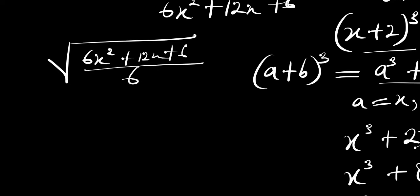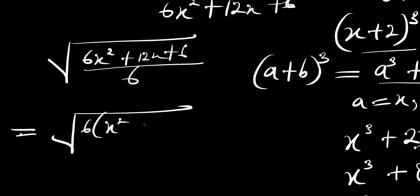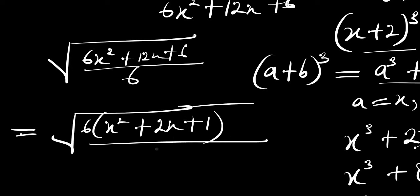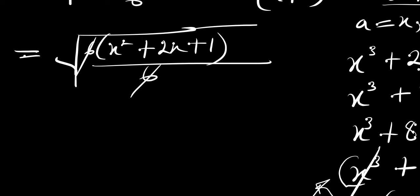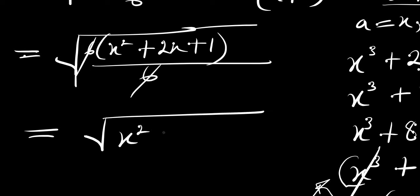The next thing we do is factor out 6 from the numerator: square root of 6 times (x² plus 2x plus 1), divided by 6. The 6 in the numerator cancels the 6 in the denominator, leaving us with just the square root of x² plus 2x plus 1.